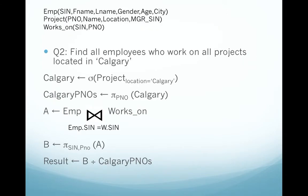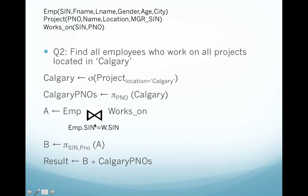Let's try another example. Here are the tables and the question: Find all employees who work on all projects located in Calgary. We select from project where location equals Calgary to find all the projects in Calgary, then project the project number to get Calgary project numbers. Then we join employees with works on where employee SSN equals works on SSN and store it in A. From A, we select the SSN and the project number and store it in B.